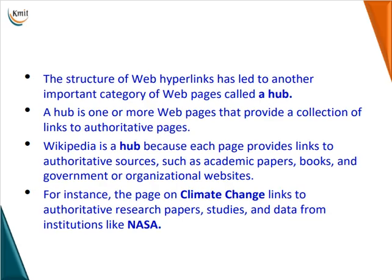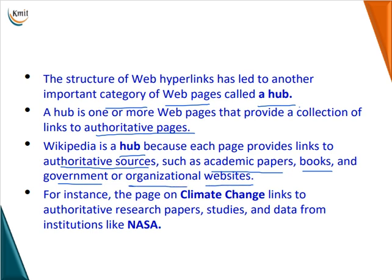The structure of web hyperlinks has led to another important category of web pages called a hub. A hub is one or more web pages that provide a collection of links to authoritative pages. We can say Wikipedia is a hub, because each page provides links to other authoritative sources like academic papers, books, and government or organizational websites. One more example: a page on climate change links to authoritative research papers, studies, and data from institutes like NASA.